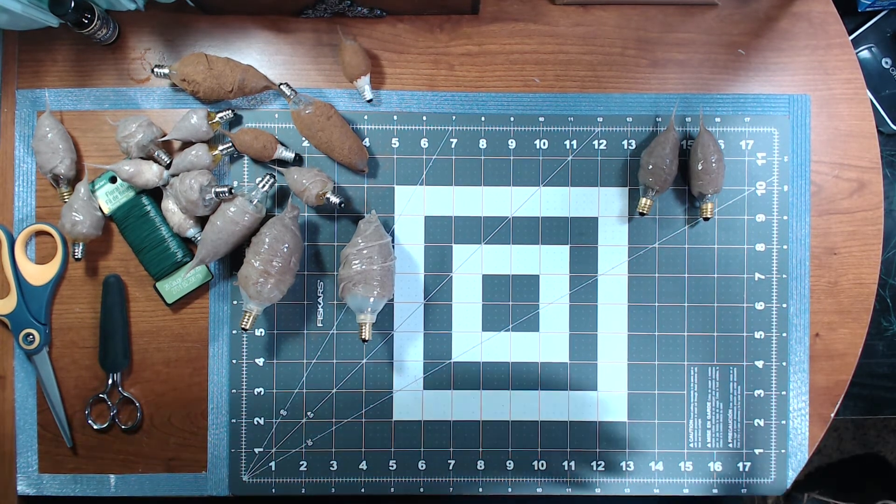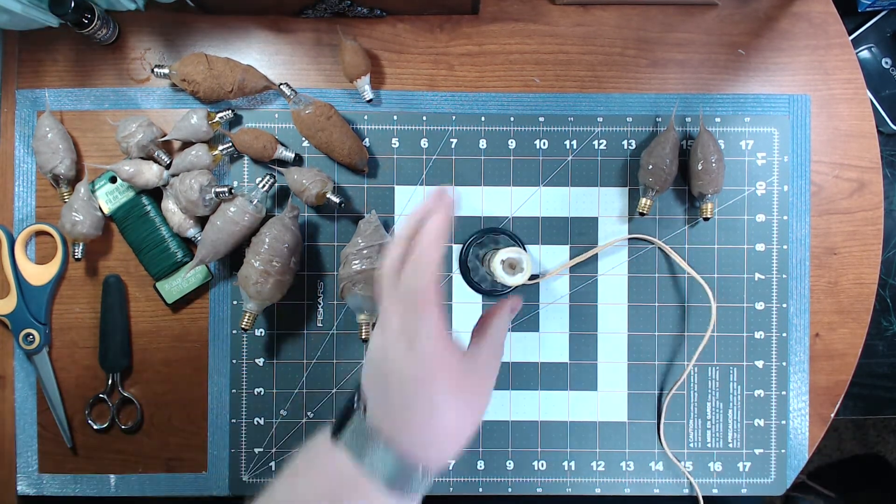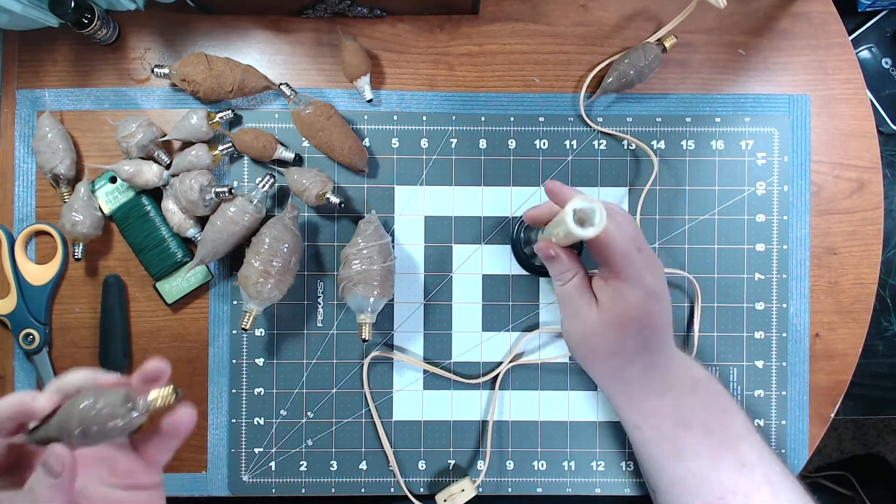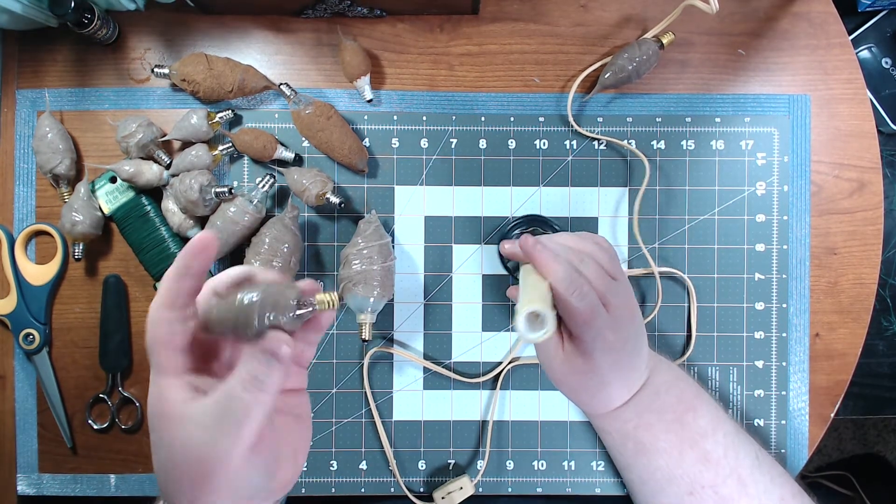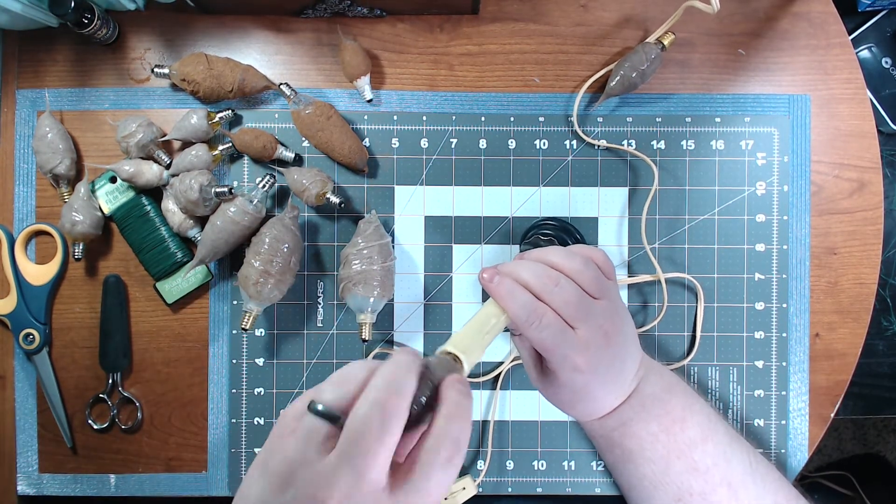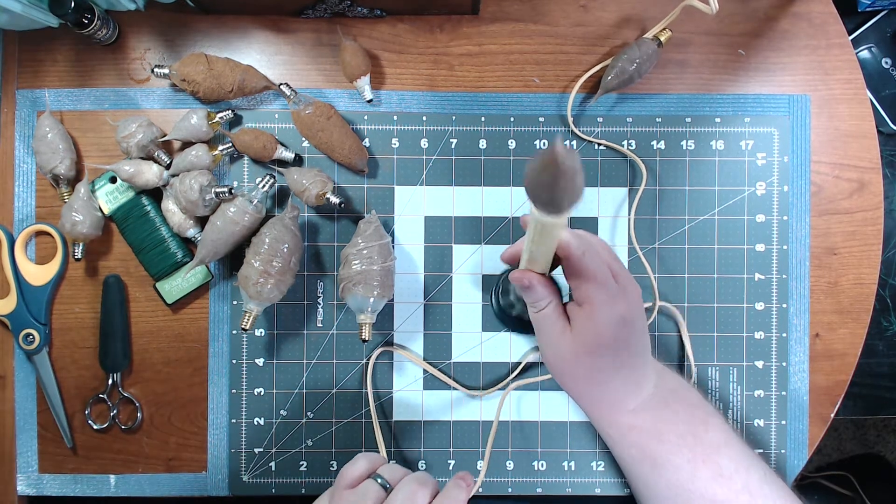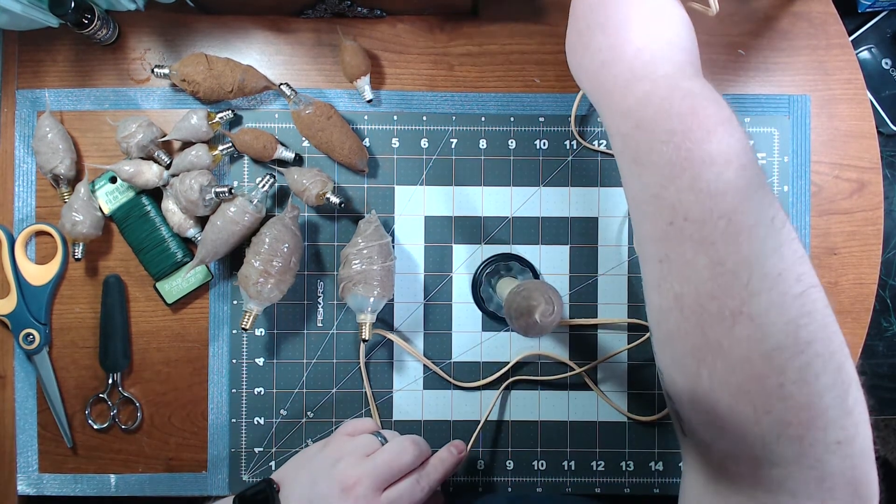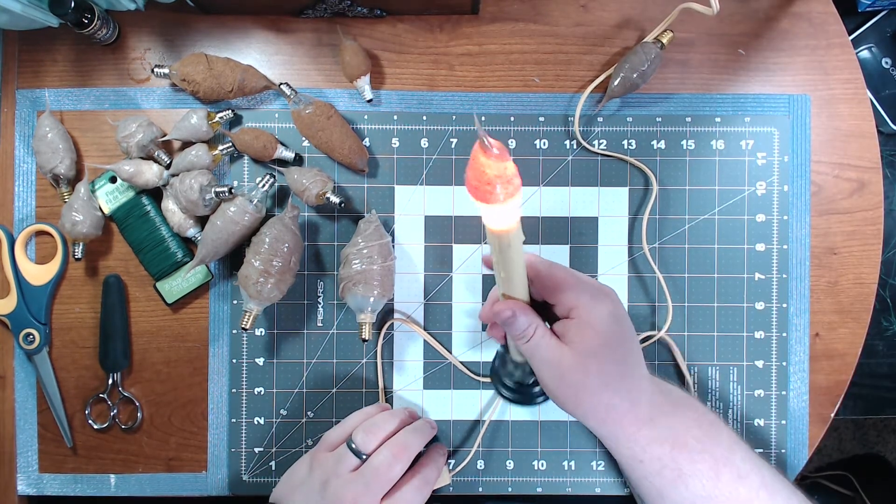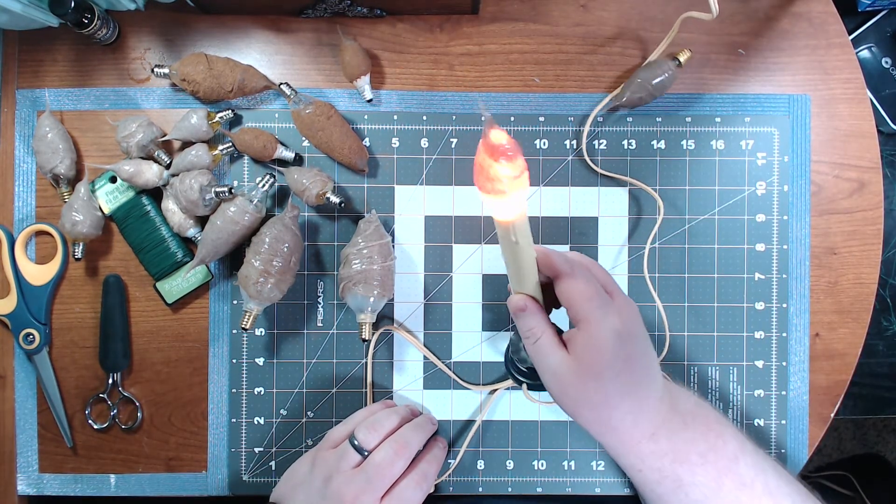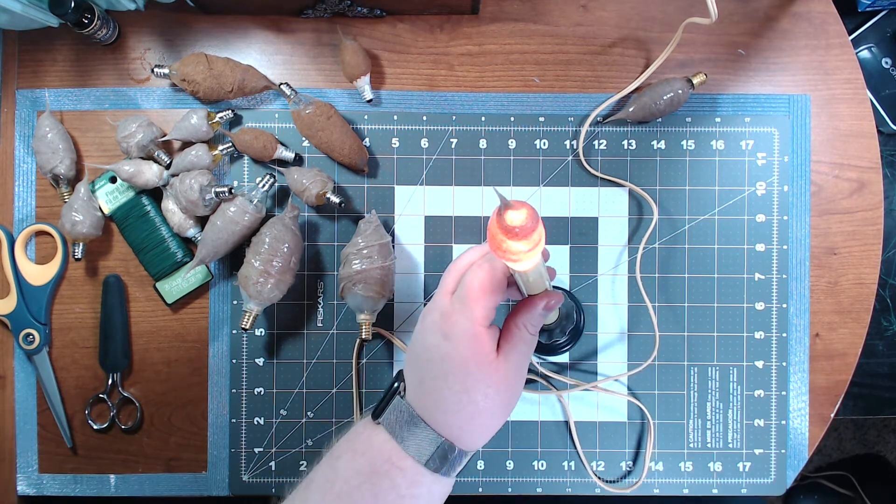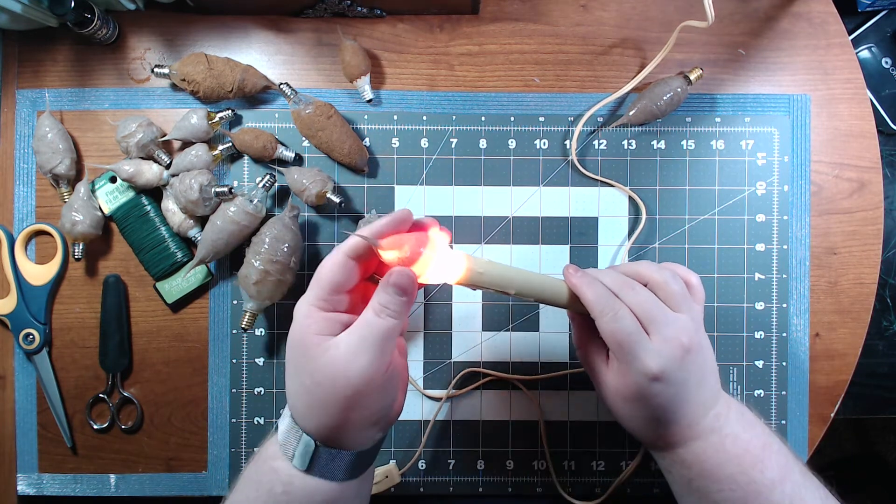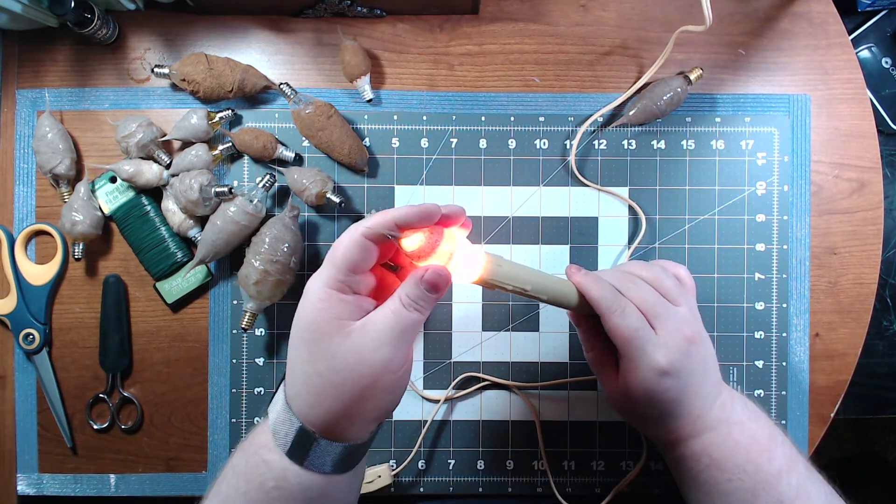Okay, so we'll get one of my little candlesticks here so you can see how they look. So here's just the plain white bulb that I just used. Turn it on. There we go. Isn't that a really cool warm glow that it gives? Let me turn these lights off here. I love it. I love how these turned out. So there's one.